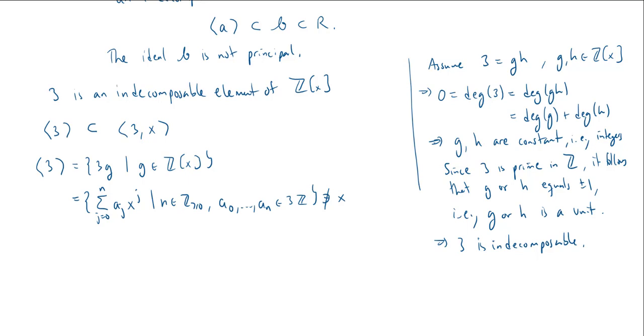Now what about on the other side? We have ℤ[x], and the claim is that the ideal generated by 3 and x is properly contained in ℤ[x]. Well, let's see why. So the ideal generated by 3 and x, this is all things of the form, you take 3 times g plus x times some h. So here, g and h are polynomials.